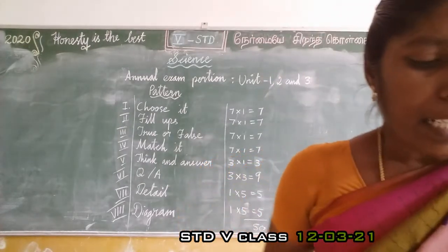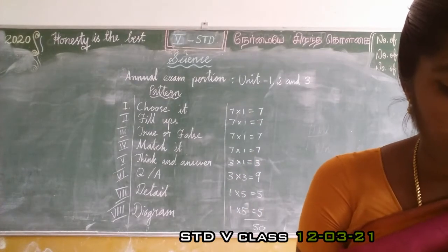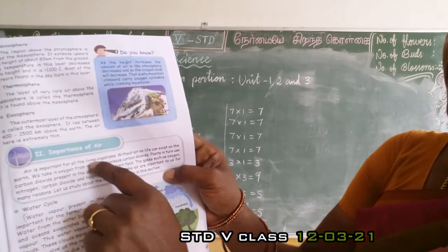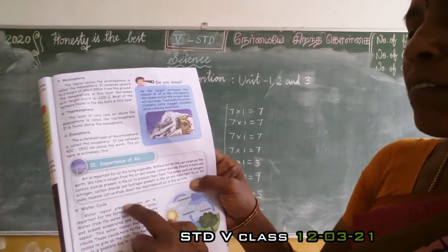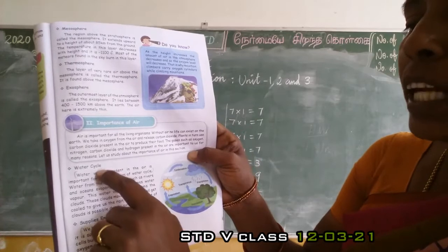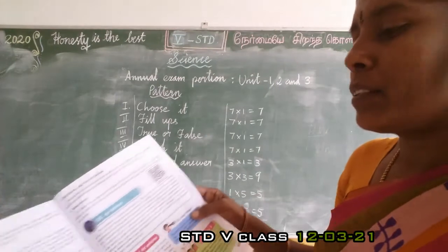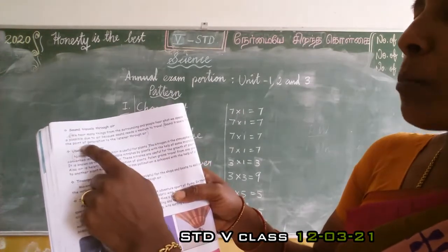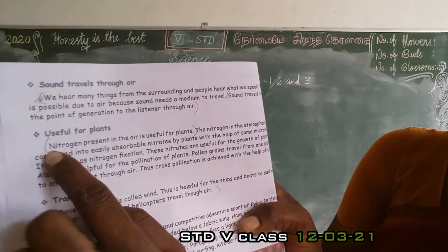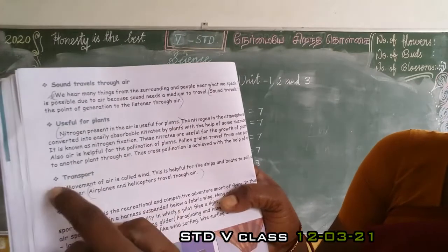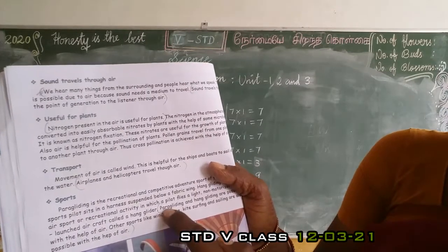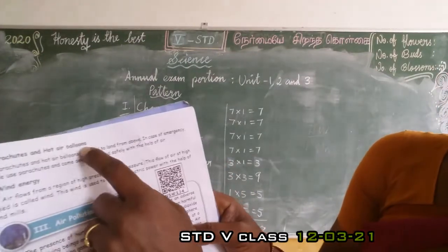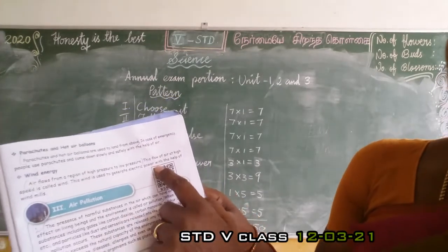Answer in detail: List the importance of air. Air is important for all living organisms. Write the heading and first two lines for each point. Cover: water cycle, supplies energy, sound travels through air - sound travels from one point of generation to the listener through air. Useful for plants, transport, sports - paragliding and hang gliding, parachutes and hot air balloons, and wind energy.